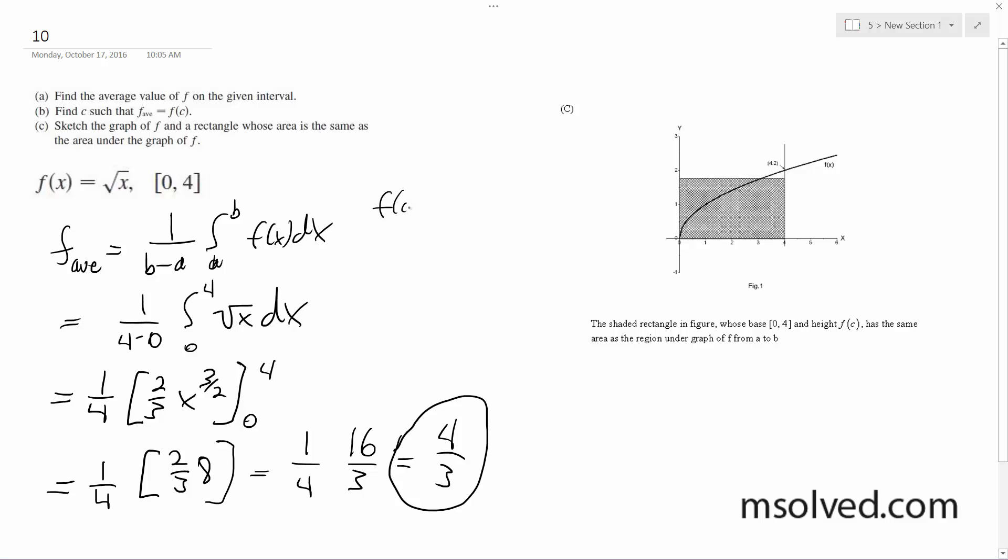f of c, we're going to have square root of c is equal to 4 over 3. c is equal to 16 over 9.